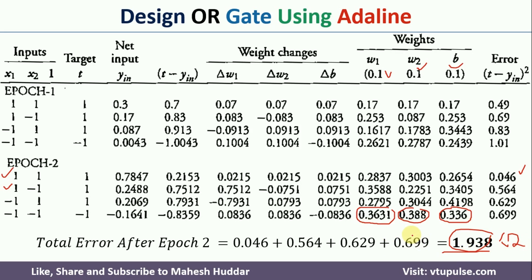In this video, I discussed how to design the OR gate using ADALINE Neural Unit, tracing through 2 epochs. If the error is still not acceptable, we repeat for epoch 3, epoch 4, and so on, until the calculated error is less than the acceptable error. I hope the concept is clear. If you like the video, do like and share with your friends, press the subscribe button for more videos, and press the bell icon for regular updates. Thank you for watching.